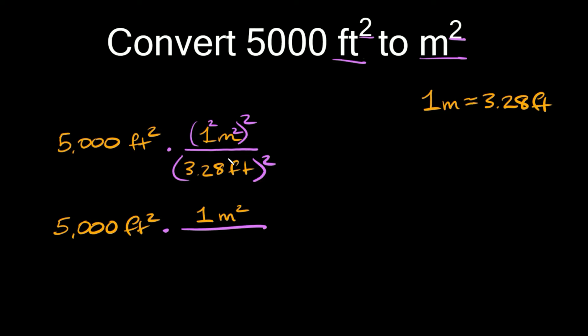And then same thing down here we need to apply the exponent to the number and to the unit. So 3.28 squared is equal to approximately, I'm just rounding here, 10.76. And then we also have to apply it to the units. So feet squared is just feet squared.